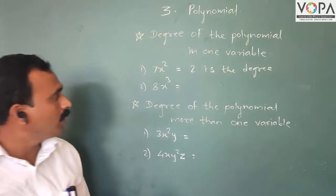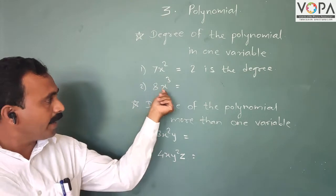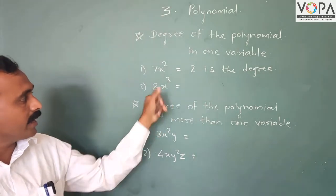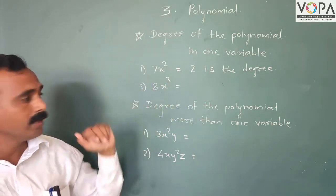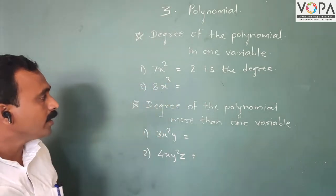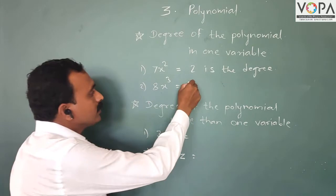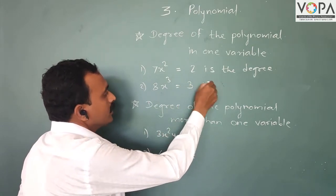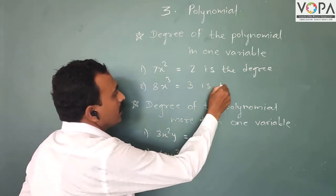In the second example, 8x³, the variable is x and the index is 3. Therefore the degree is 3.